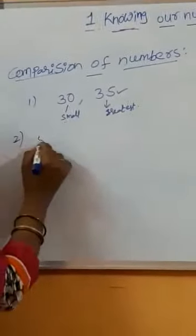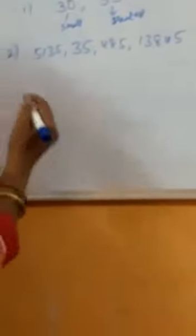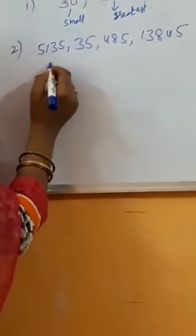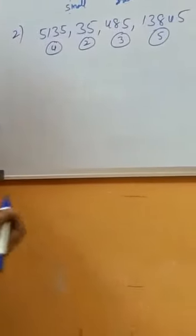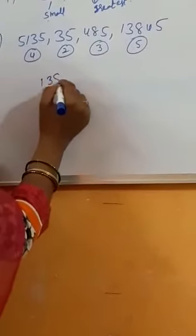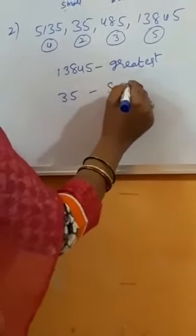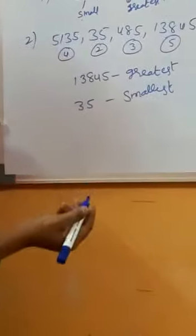Let's take another example. Among these numbers, which one is the greatest and which one is the smallest? First, we count the digits in each number. One number has 4 digits, another has 5 digits. So 13845 is the greatest number and 35 is the smallest number. It is easily identified when we count the digits in these numbers.